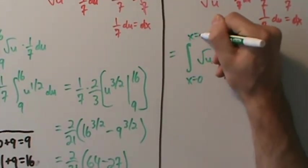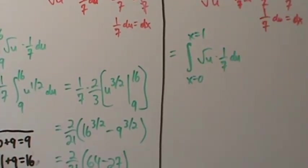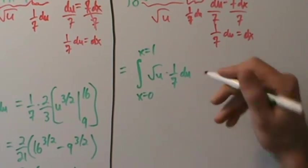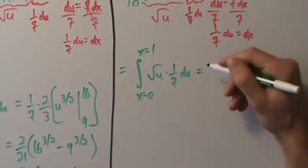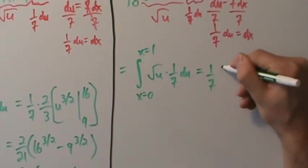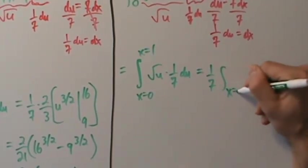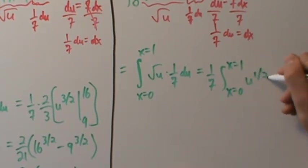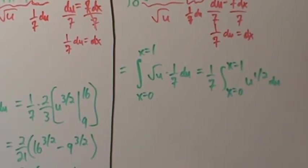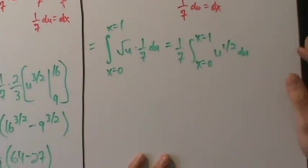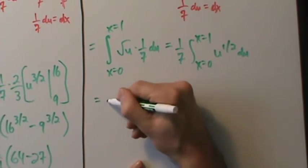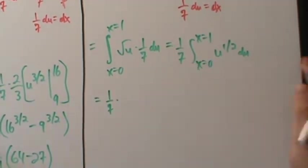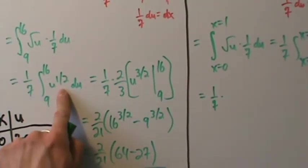So we write (1/7) times the integral from x = 0 to x = 1 of u^(1/2) du, and continue evaluating — the integral of u^(1/2) is still (2/3)u^(3/2).